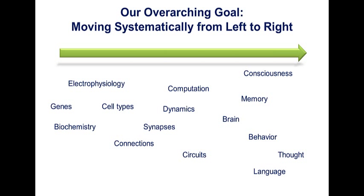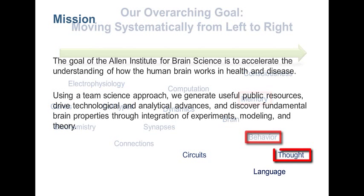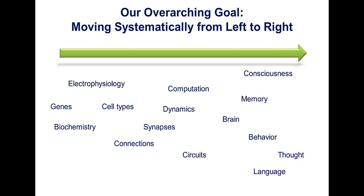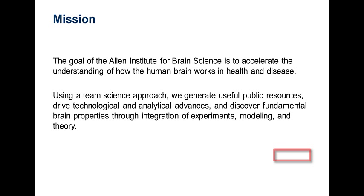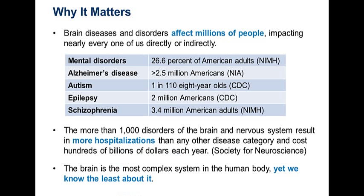At the Allen Institute, our overarching goal is to understand the brain. We are doing it systematically — we started with genes, we've started to get into cell types and connections, and we're looking at computation, but ultimately we're interested in answering fundamental questions about consciousness, memory, behavior, and thought. The mission of the Allen Institute for Brain Science is to accelerate the understanding of how the human brain works, both in health and disease, using a team science approach through the integration of experiments, modeling, and theory.